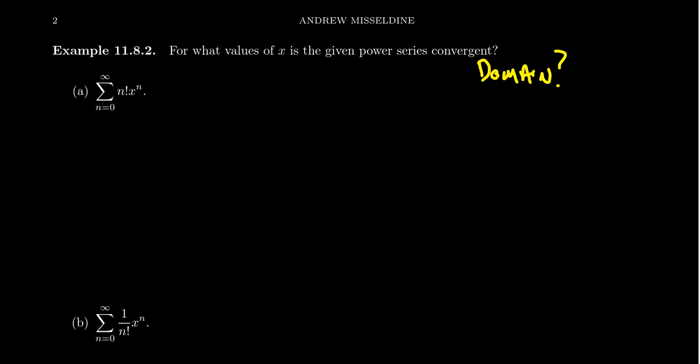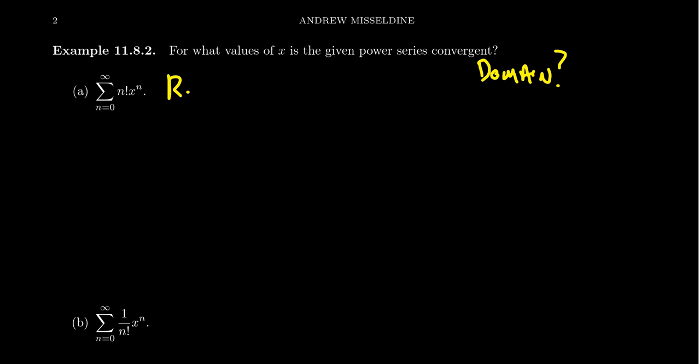Let's look at some examples. Starting with example A: we take the sum from N equals 0 to infinity of N factorial times X to the N. Our main tool for finding the domain of a power series is going to be the ratio test. You can use the root test if you prefer, but the ratio test will generally be very effective in this context, because since you have powers of X, the ratio will help you simplify those powers of X.